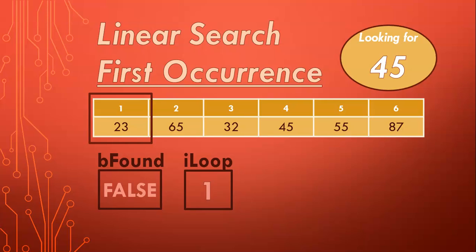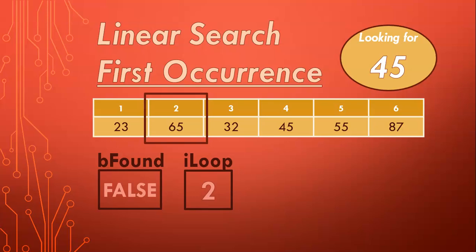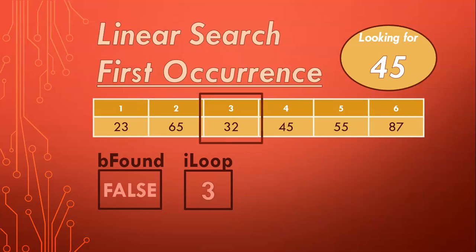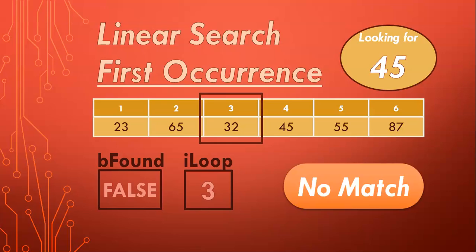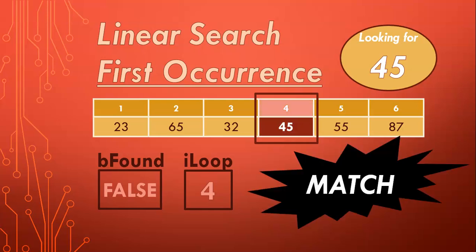Now we're going to keep looping. We check: is that a 45? Nope, 23 is definitely not a 45. So we increase the looping variable to 2 — is that 65 a 45? Nope. Increase again — that 32, is that a match? Nope. Increase the looping variable again. And we go: 45 — is that a match? 45... 45 — that looks like a match! That's a match. So we found a match.